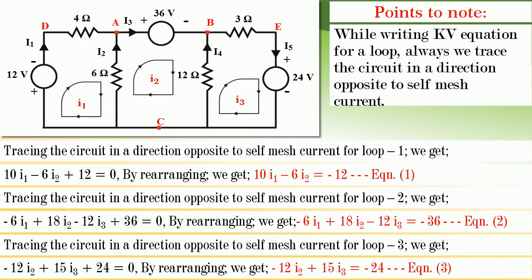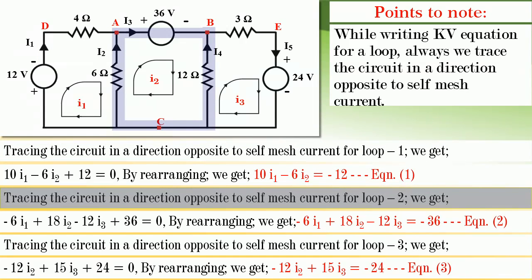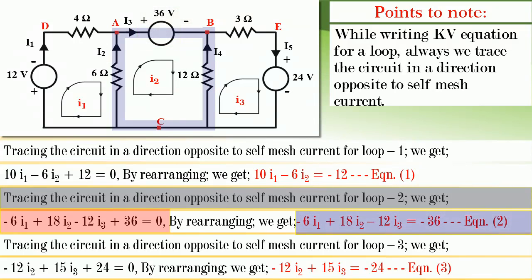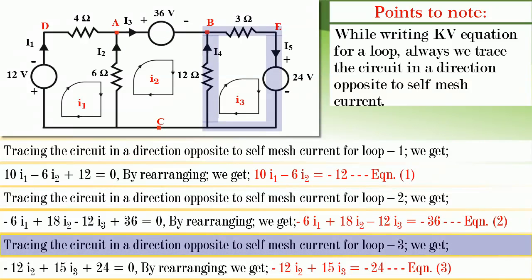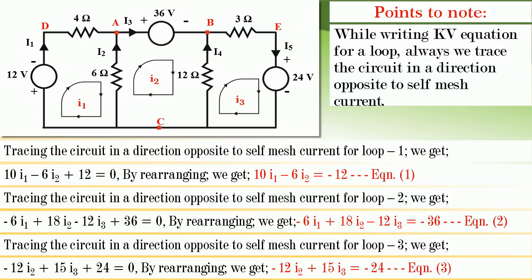Similarly, writing the KVL equation for loop 2 gives: −6i1 + 18i2 − 12i3 + 36 = 0, which rearranges to −6i1 + 18i2 − 12i3 = −36. Let this be equation 2. For loop 3, tracing the circuit as usual gives: −12i2 + 15i3 + 24 = 0, which rearranges to −12i2 + 15i3 = −24. Let this be equation 3.